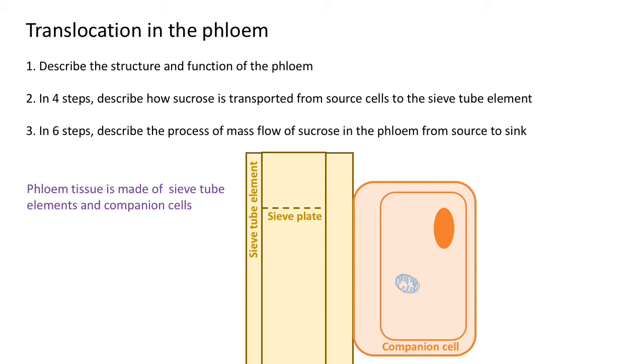It doesn't have a nucleus and doesn't have ribosomes, just has a few mitochondria and a small amount of smooth endoplasmic reticulum. Then each sieve tube element will have a companion cell with it.